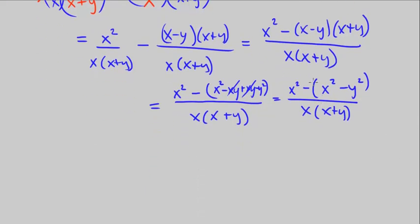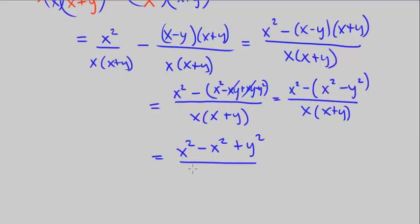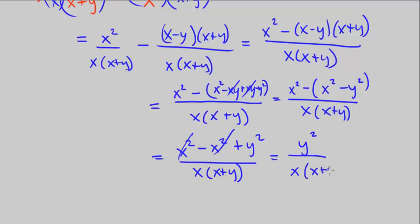Now distribute the negative sign: x squared minus x squared plus y squared over x times x plus y. The x squared terms cancel, and we're left with y squared over x times x plus y.